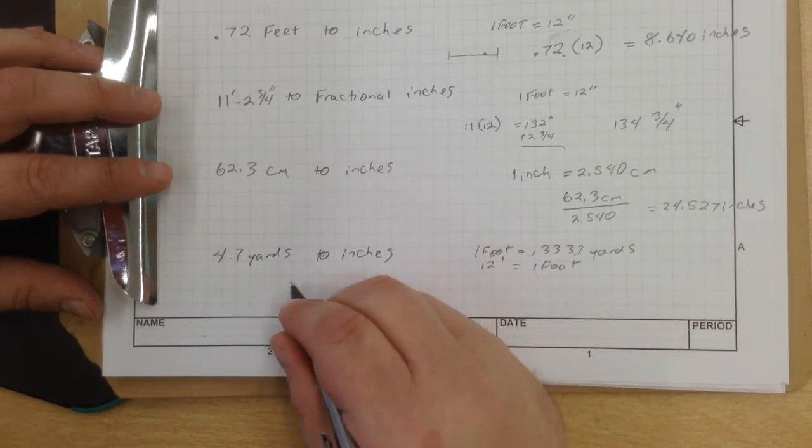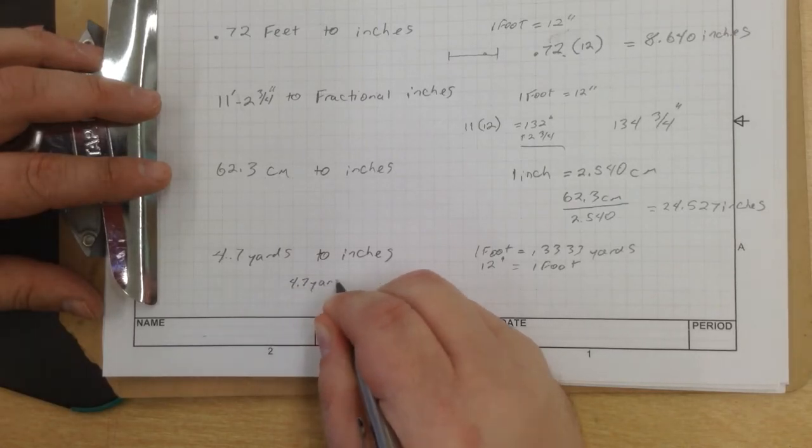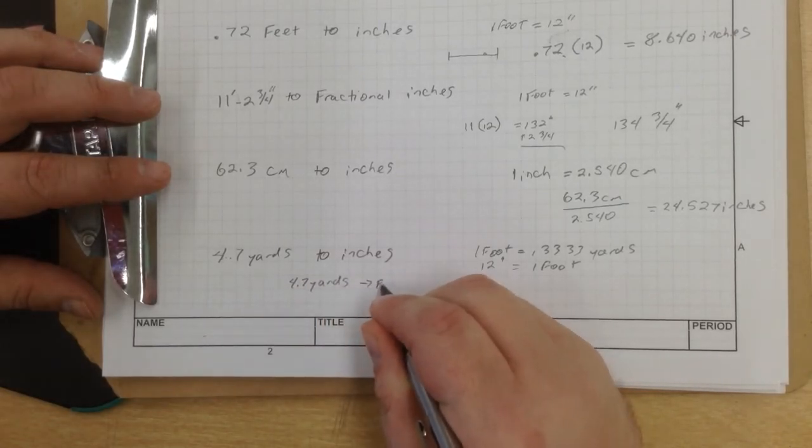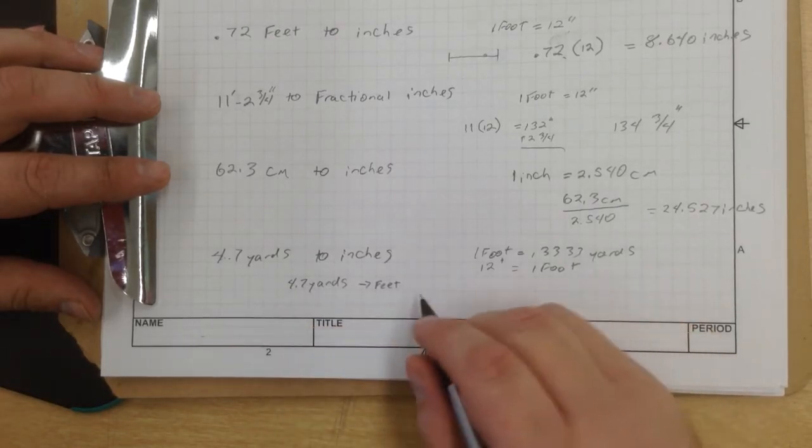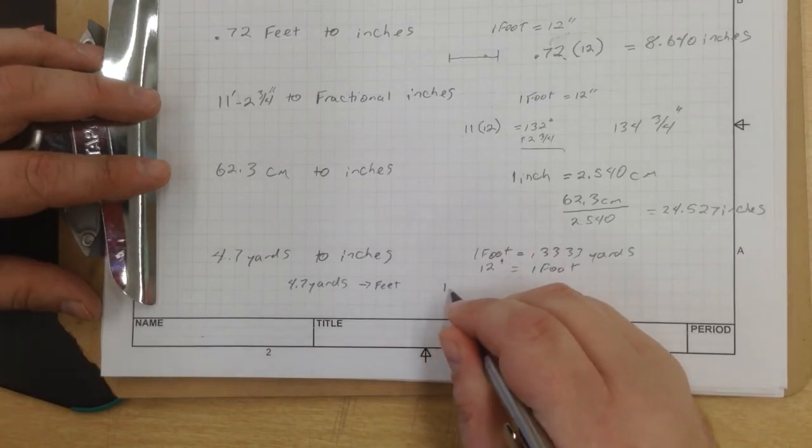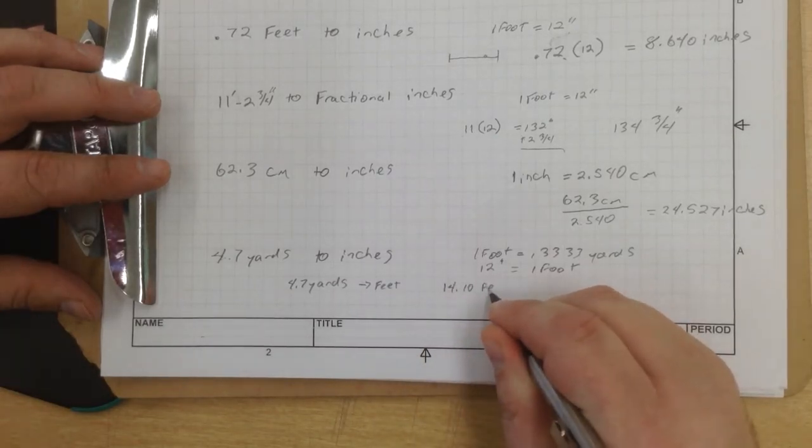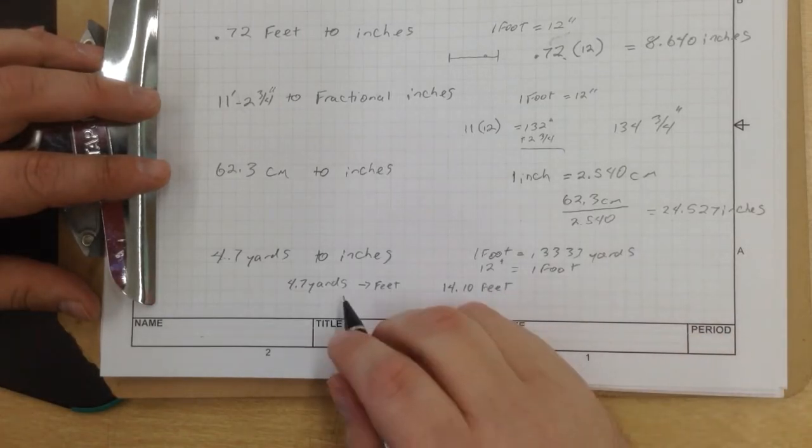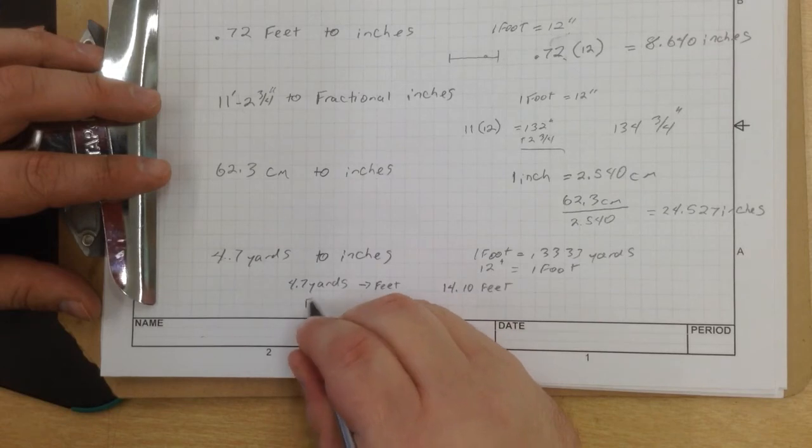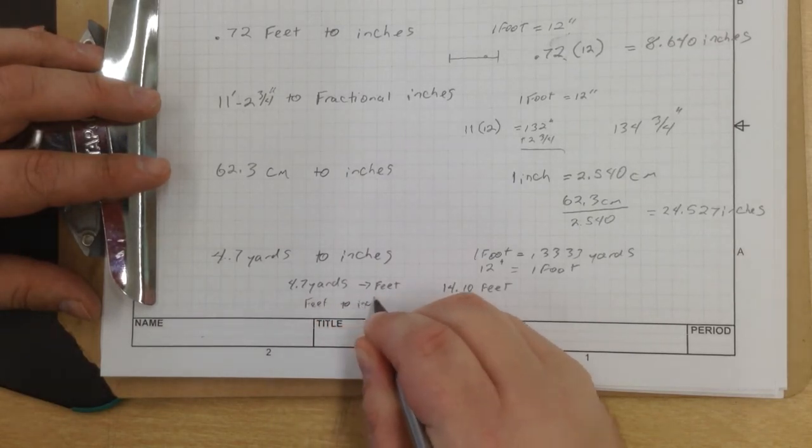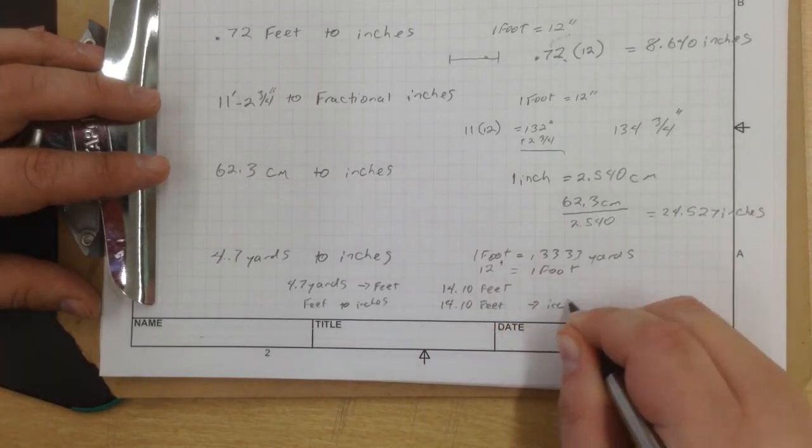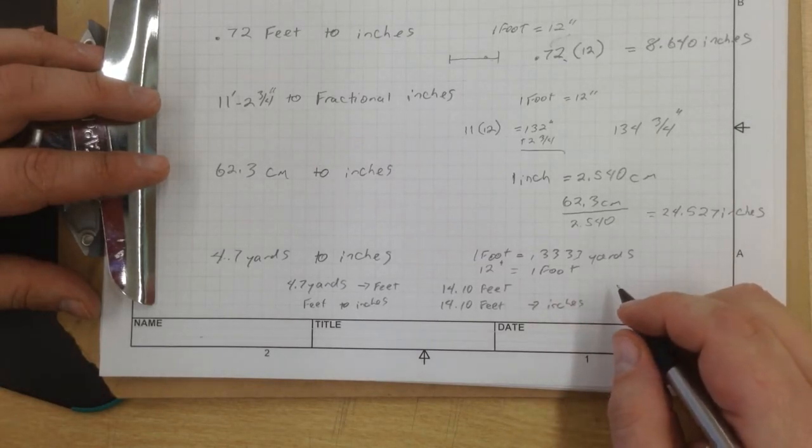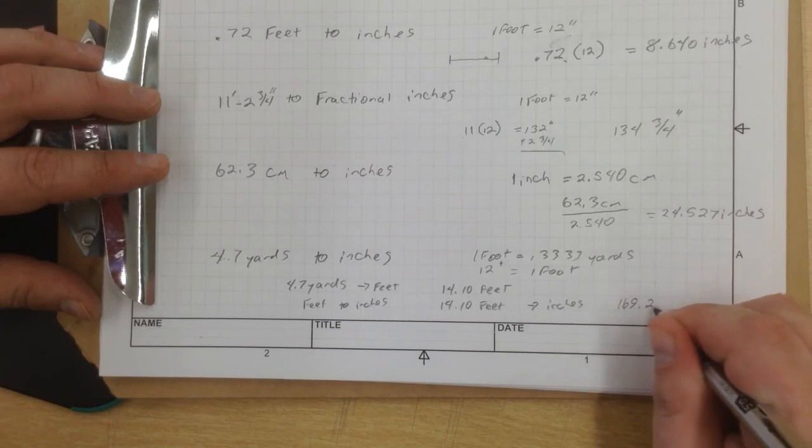The easiest thing, so we have 4.7 yards, and we need to convert that into feet. So, let's see, 4.7 yards equals 14.10 feet. And then feet to inches, 14.10 feet to inches equals 169.22.